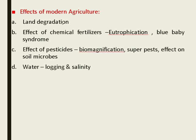Modern agriculture also contributes to low yield through land degradation. Use of chemical fertilizers causes eutrophication and blue baby syndrome. Pesticides cause biomagnification — entry of harmful pesticides into the food chain — and create super pests resistant to pesticides. Useful soil microbes are killed by pesticides, and water logging and salinity also make soil barren.